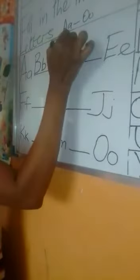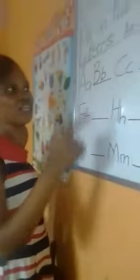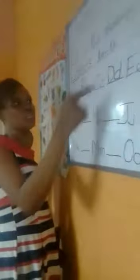Good. Now let's read: capital letter A, small letter A, capital letter B, small letter B, capital letter C, small letter C. The next letter after C is letter D. Capital letter D and small letter D. Now let's write it. Capital letter D — stroke down. Capital letter E, small letter E. Capital letter F, small letter F.